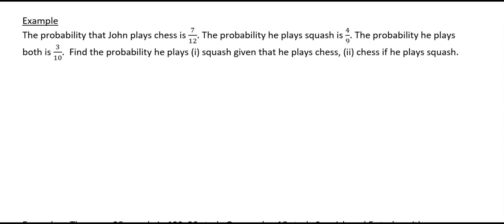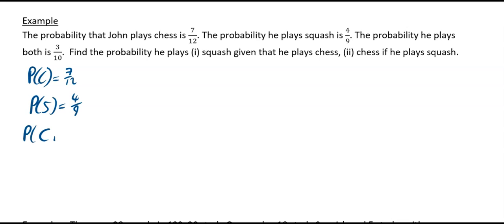This example says the probability that John plays chess is 7/12, the probability he plays squash is 4/9, and the probability he plays both is 3/10. Find the probability he plays squash given that he plays chess, and chess given that he plays squash.